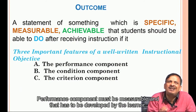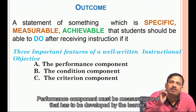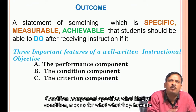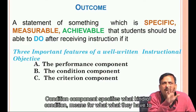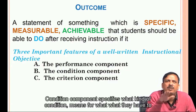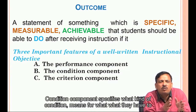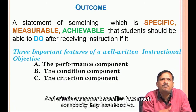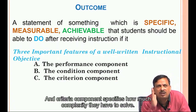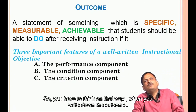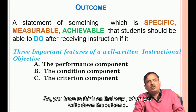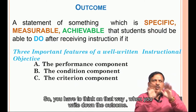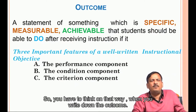The performance component must be measurable and developed by the learner. The condition component specifies what kind of condition they have to perform under, and the criteria component specifies how much complexity they have to solve. You have to think in that way when you write down the outcome.